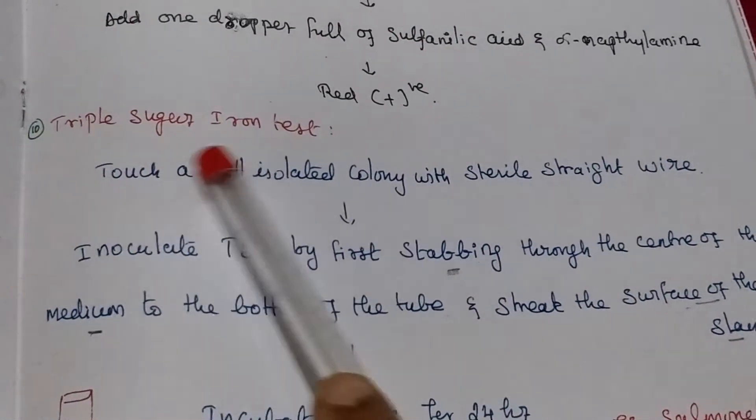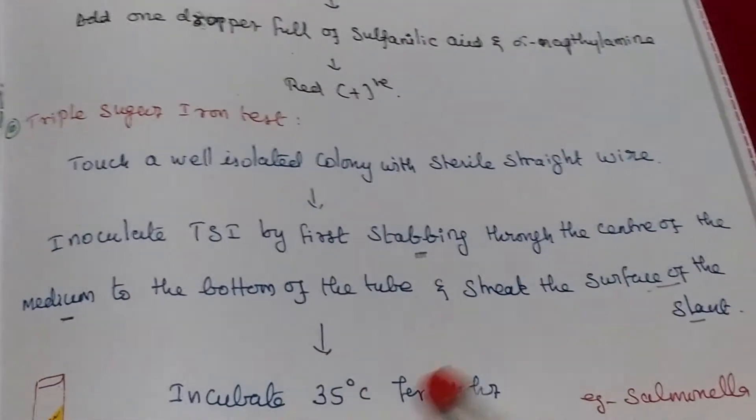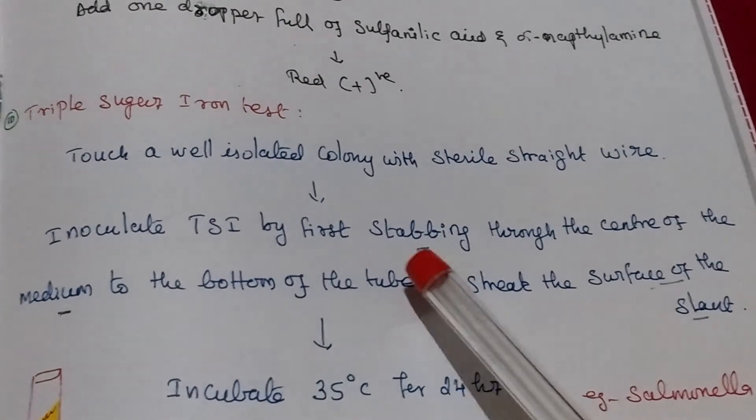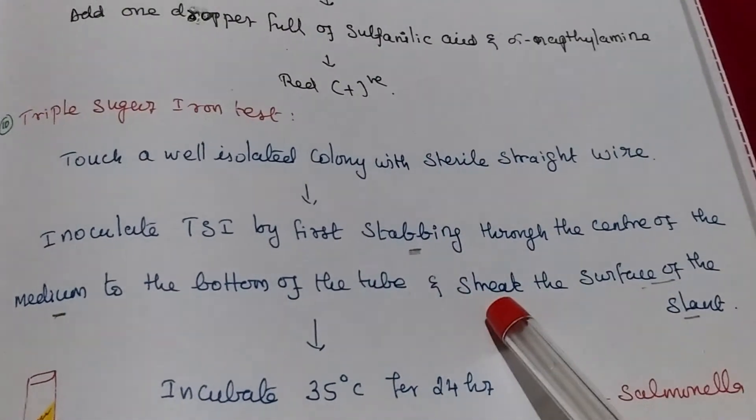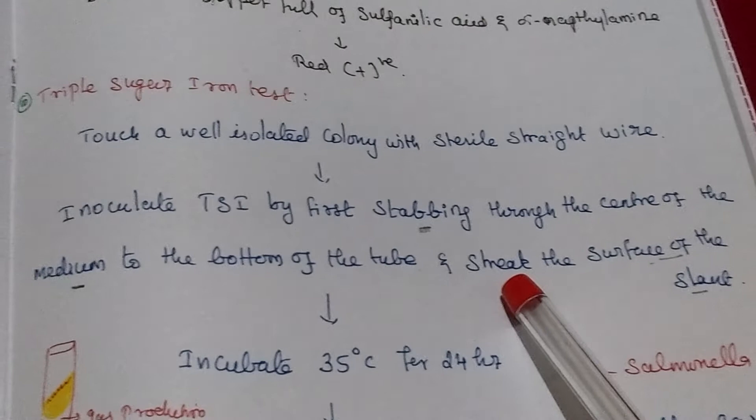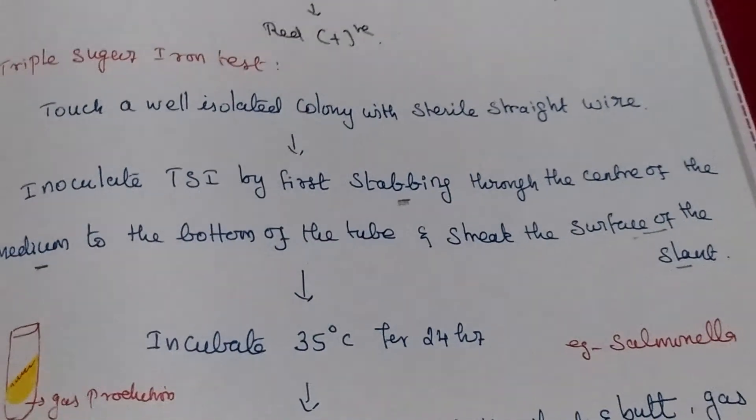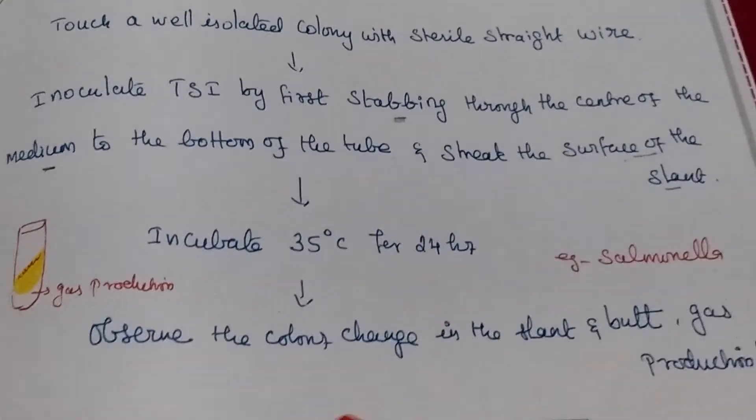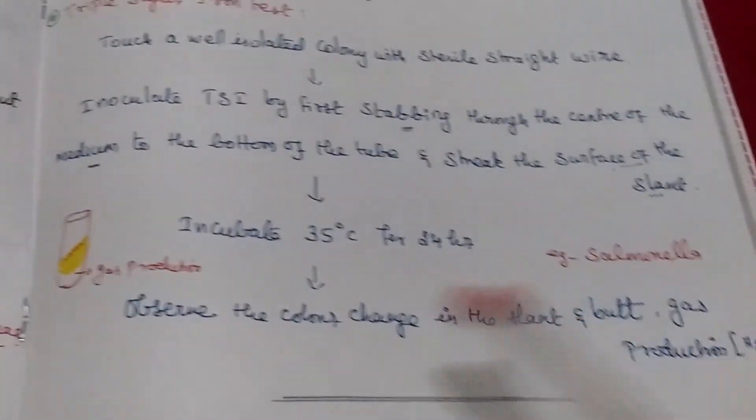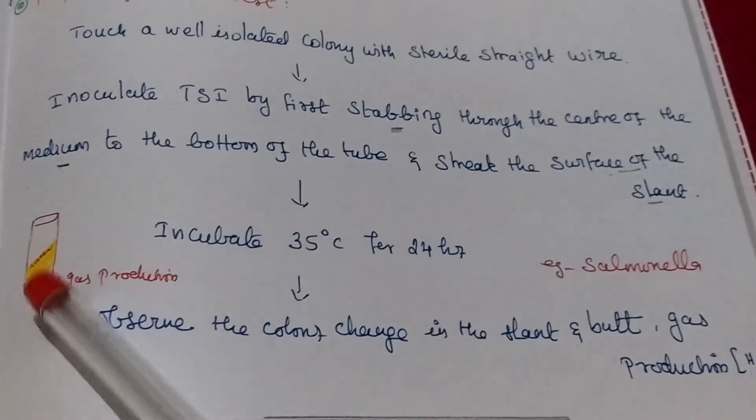Then triple sugar iron test. Here we are preparing using 2 methods: stabbing method and streak method. After incubation 35 to 24 hour, observe color changes and gas production. This one is gas production.